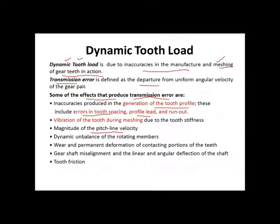Further factors causing transmission error are: vibration of the tooth during meshing due to tooth stiffness; the magnitude of the pitch line velocity; dynamic unbalance of rotating members; wear and permanent deformation of the teeth; gear shaft misalignment and linear or angular deflection of the shaft; and friction between the teeth. These seven factors affect the transmission error, which in turn causes dynamic tooth load during operation.